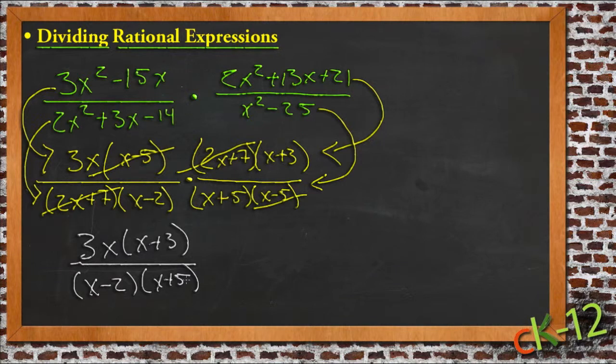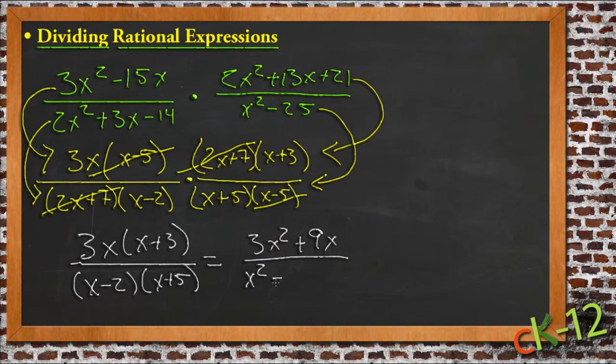And you can either leave your answer in that form, or if you want to go ahead and distribute it out, you'd get 3x squared plus 9x over x squared plus 3x minus 10.